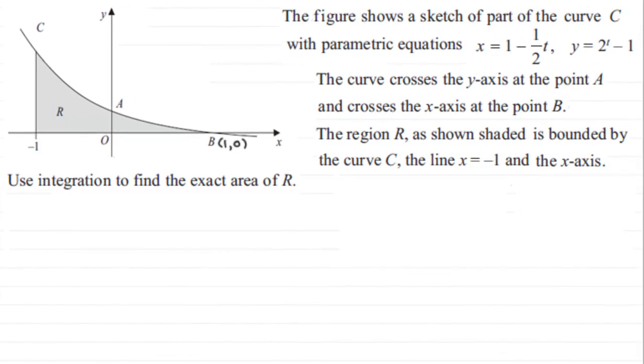Hi, now what we've got here is our curve C with this parametric equation, and we have to work out using integration the exact value of this area R, which is between the lines x equals minus one and this point B at one zero. If you haven't done this question already, I'll give you a moment to pause the video and come back to check your solution with mine.